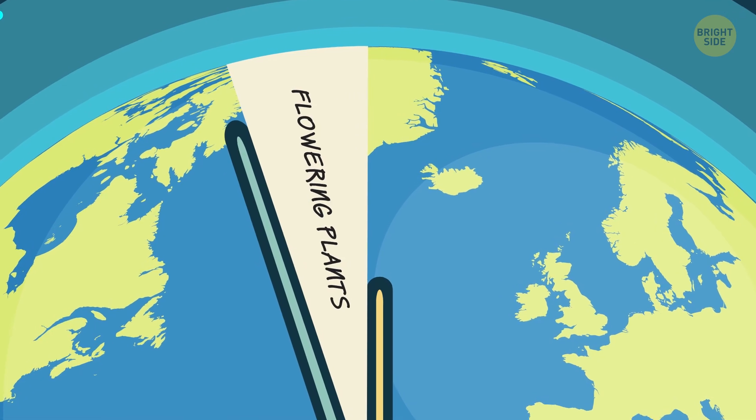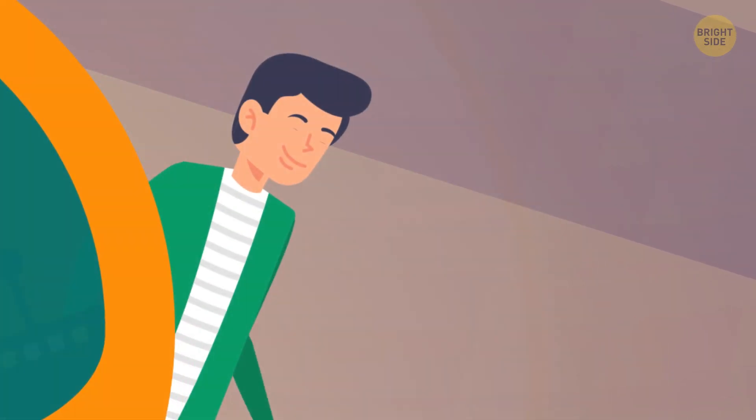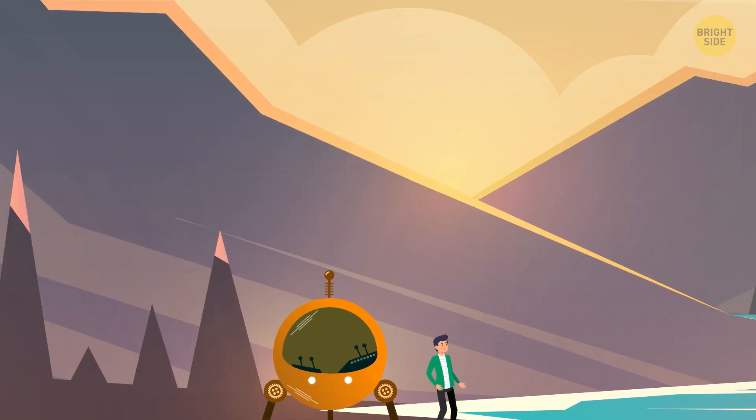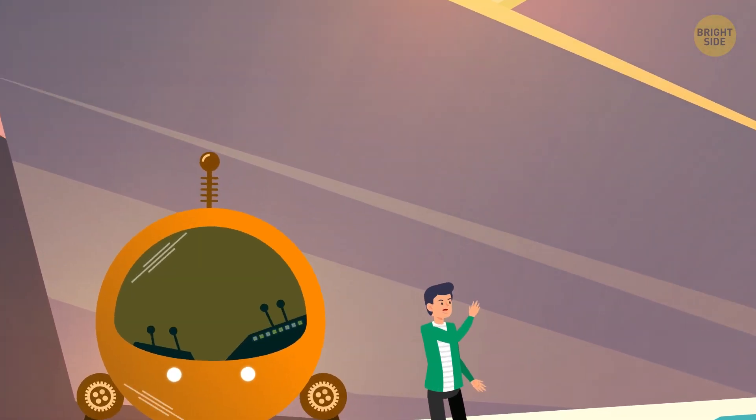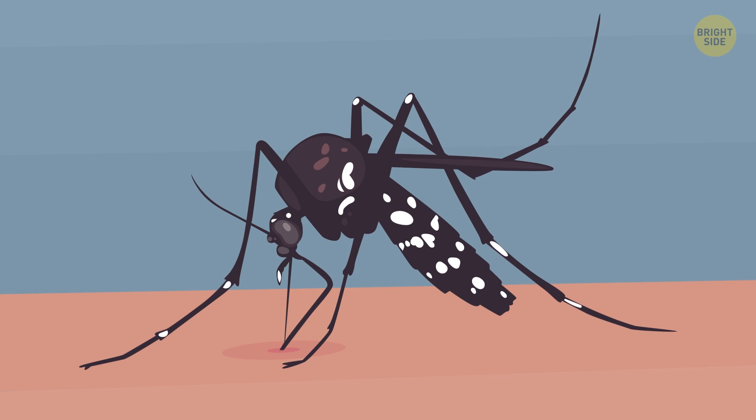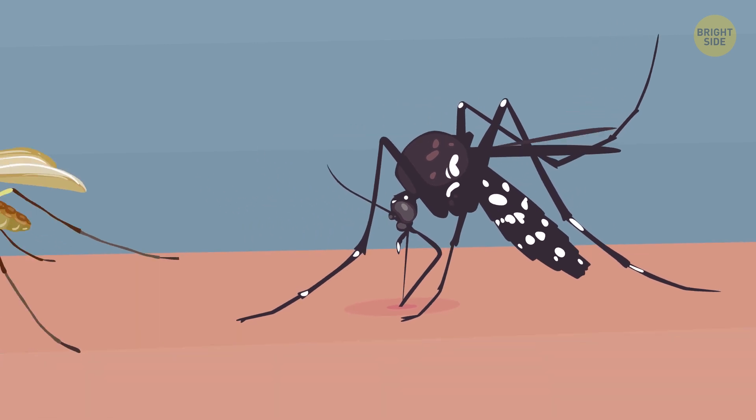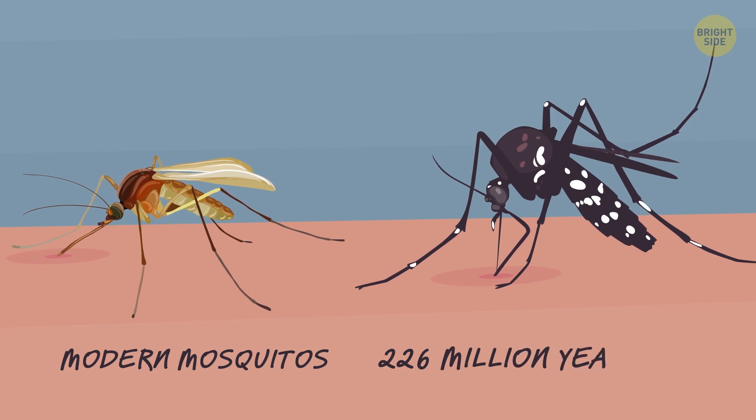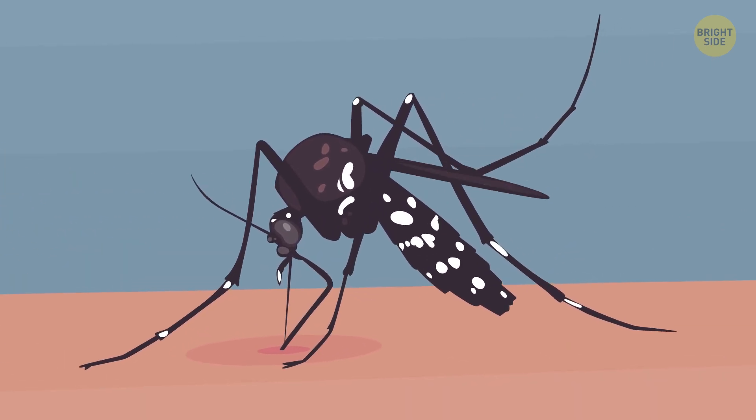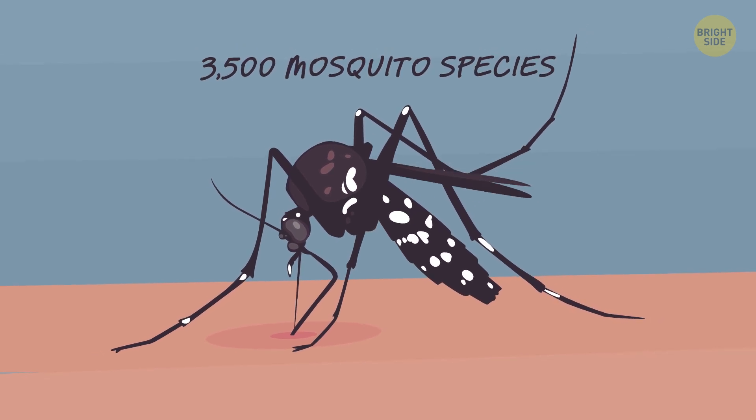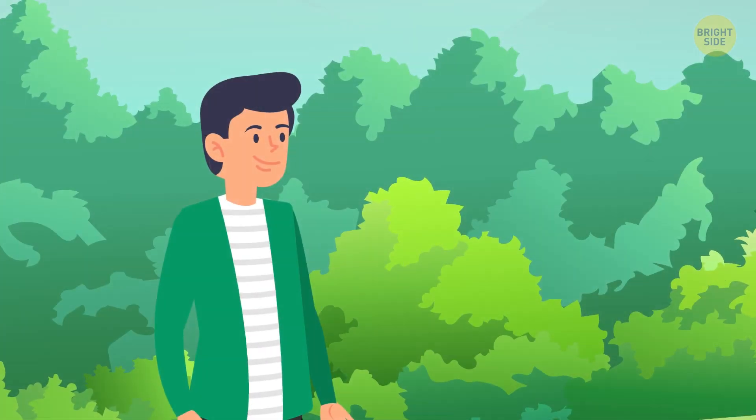Sam steps out of his time machine 200 million years ago and awes at the scenery around. The only thing bothering him is a faint buzzing sound next to his ear. It's the very first mosquito! Scientists connected modern mosquitoes to species that lived 226 million years ago. They look pretty much the same as most of the 3,500 mosquito species that exist nowadays.